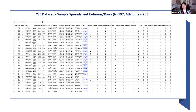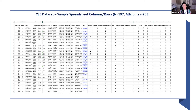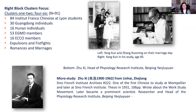We have gone through the basic attributes of the CSE dataset. This is what it looks like in a sample spreadsheet with both columns and rows. Obviously, for publishing, you would want to export an SVG, PNG, or JPEG so people can clearly see the names and manipulate the data. Now I want to make a different point: to give examples of historical discussion of several clusters. I divided the results into a left block and a right block. The exciting thing about this is not the quantitation — it is what the clusters mean.